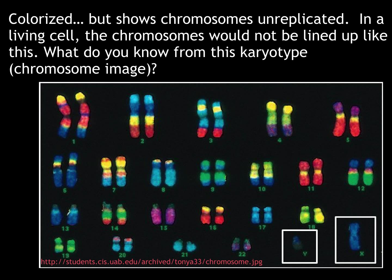We call this image a karyotype, and it shows all 23 pairs of homologous chromosomes. In each pair of homologous chromosomes — for example, in set number 1 — one chromosome came from the mother and one from the father. If we look at the 23rd pair of chromosomes, we can tell that this particular individual is a male, because they have one X chromosome and one Y chromosome. A female would have two X chromosomes.